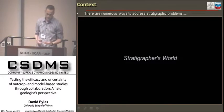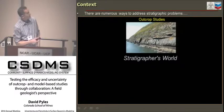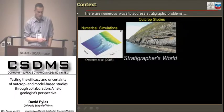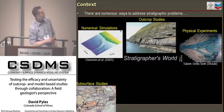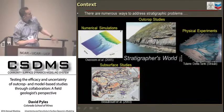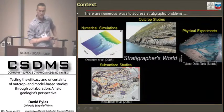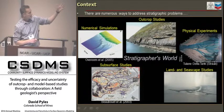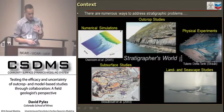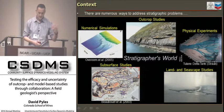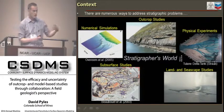In terms of context, we all know there are a number of ways to address stratigraphic problems. My world is here as an outcrop stratigrapher, but most of you in the room are numerical modelers using numerical simulations. There's physical experimentation, subsurface studies, and land and seascape studies—meaning modern systems. In my experience, I see very strong relationships between numerical simulations and modern landscape studies, and the previous keynote was a great example of how the modern landscape is being used to test the efficacy of models and vice versa.